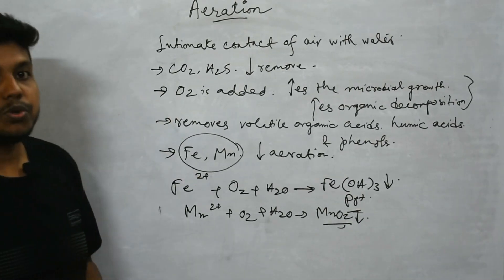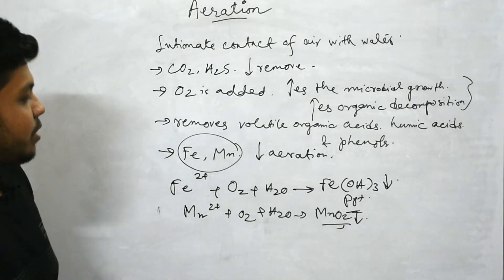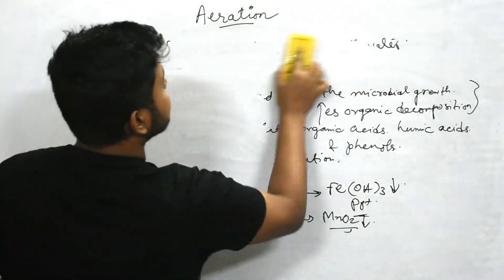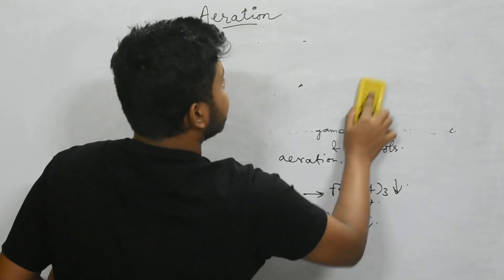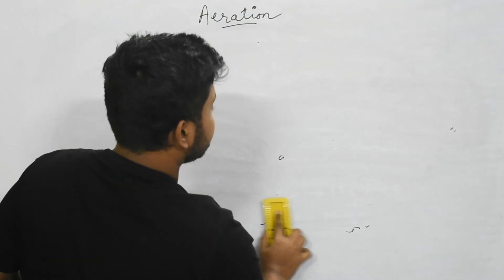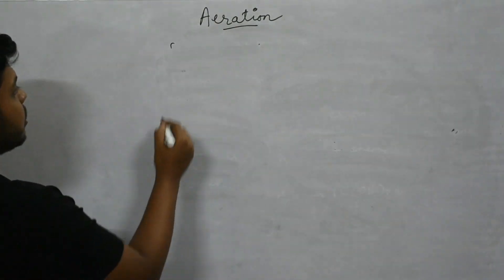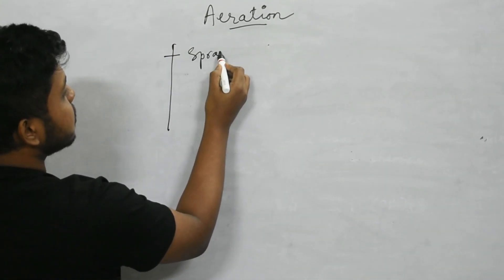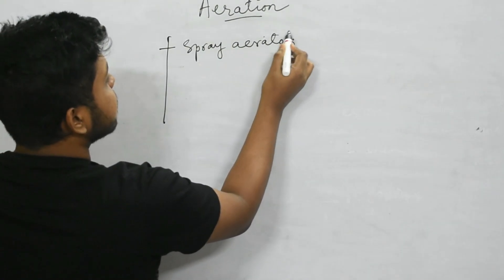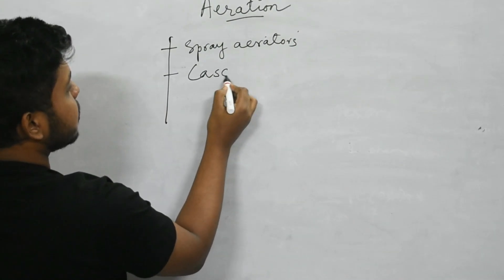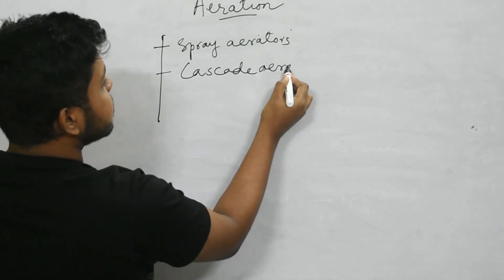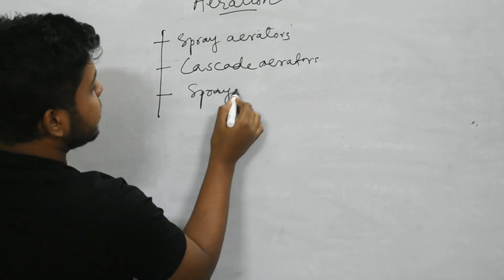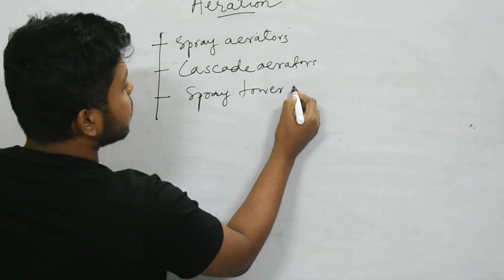Now we will discuss different aerators in some pictorial format. There are several types of aerators: firstly the spray aerators, cascade aerators, and spray tower aerators.